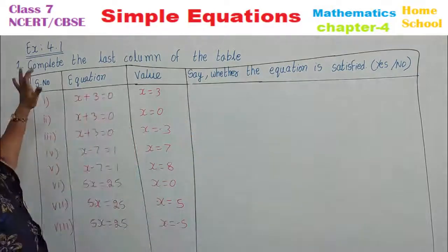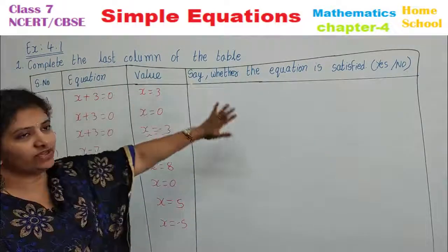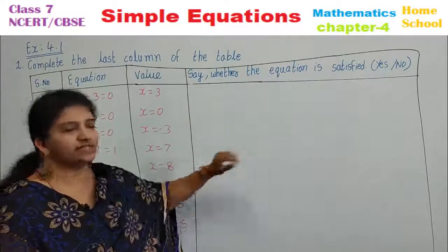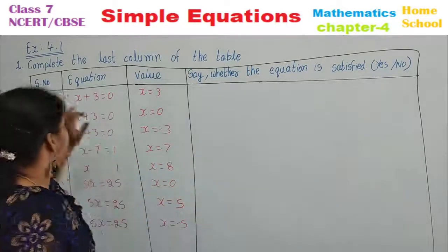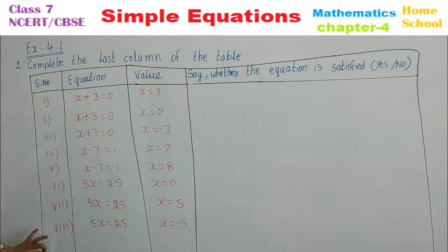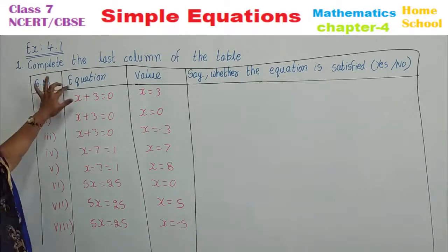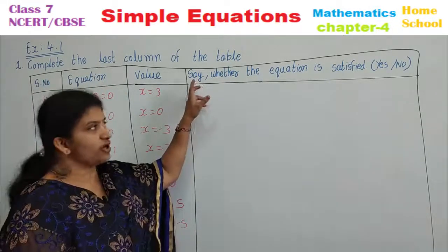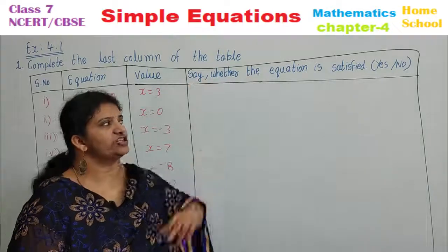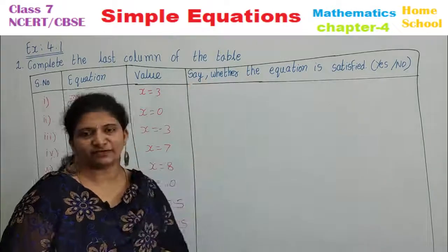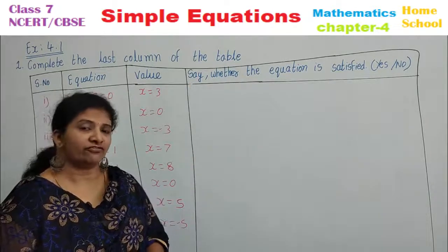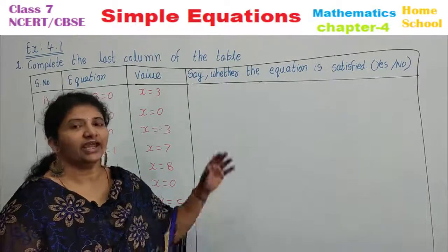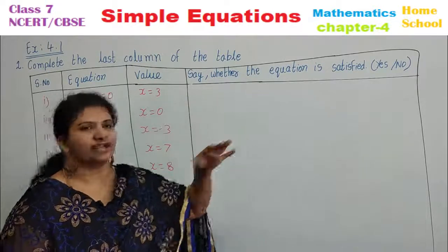First problem: complete the last column of the table. You can see the table here — serial number, equation, value, and the last column where you indicate whether the equation is satisfied. Write yes if it is satisfied, or no if it is not satisfied.